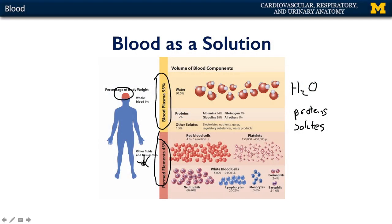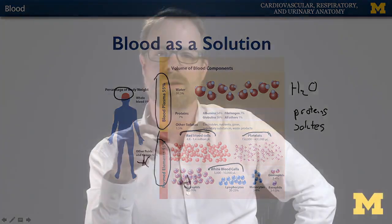The formed elements are cells or parts of cells that have distinct functions. They include erythrocytes, or red blood cells; leukocytes, or white blood cells; and thrombocytes, or platelets. The red blood cells are of supreme importance in terms of gas delivery, such as oxygen and carbon dioxide. The white blood cells are an important component of the immune system, and the platelets are important for modulating clotting of blood.